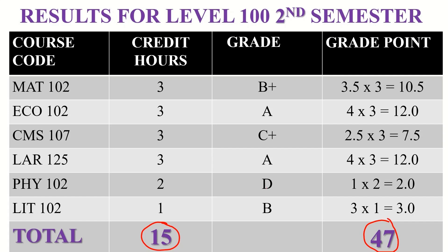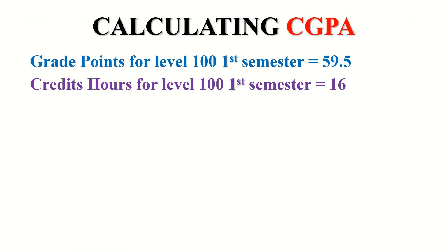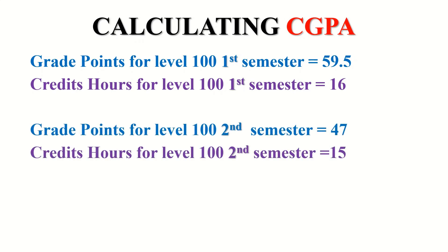So this is the data for a particular student in Level 100. Since CGPA is based on two or more semesters, we have the results for this student in Level 100 first semester and second semester. To summarize: in Level 100 first semester the grade point was 59.5 and the credit hours was 16; in second semester the grade point was 47 and the credit hours was 15.